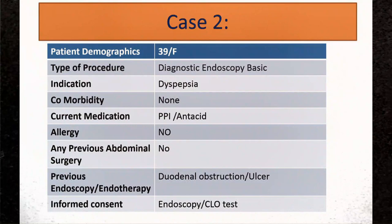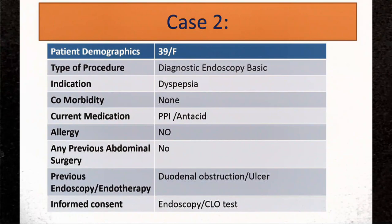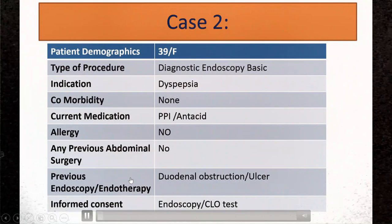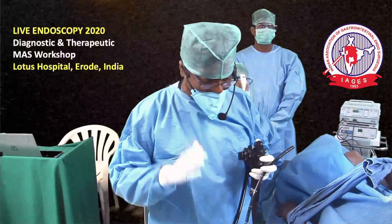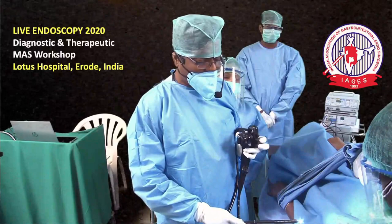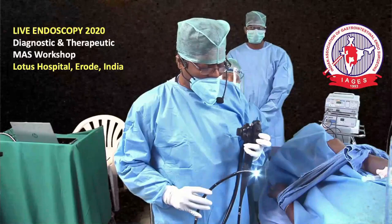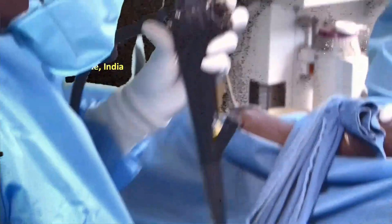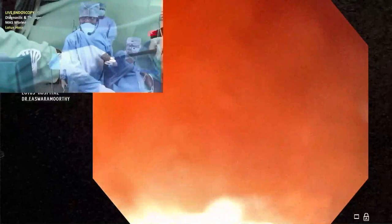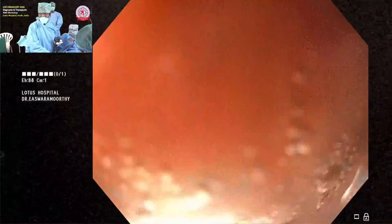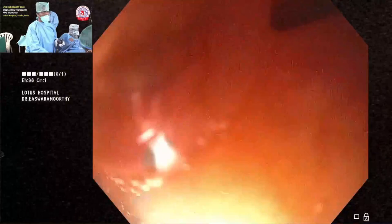The second case: the patient is currently on proton pump inhibitors and antacids, no allergy, no previous surgeries. Previous endoscopy showed duodenal obstruction three months ago. As this is a COVID era, a COVID test was performed and is negative. Dr. Iswara Brity will now take over. Stance: stand at ease, hold the scope comfortably, make a gentle curve with the big wheel toward you — fingers allocated to buttons and wheels as established in the first module.